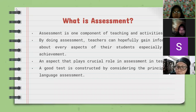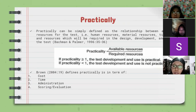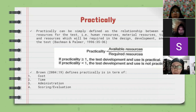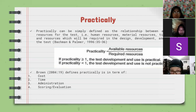The first principle is practicality. Practicality can be simply defined as the relationship between available resources for the test — for example, human resources, material resources, time, and so on — and the resources required in the design, development, and use of the test, by Bachmann and Palmer (1996, p.35-36). Brown (2004, p.19) defines practicality in terms of cost, time, administration, scoring, and every reason.